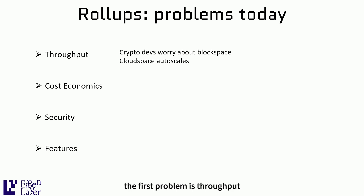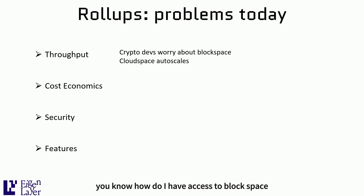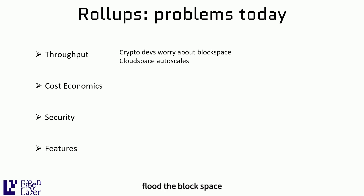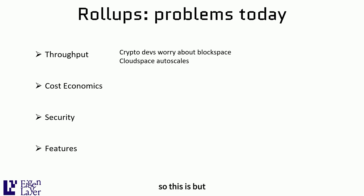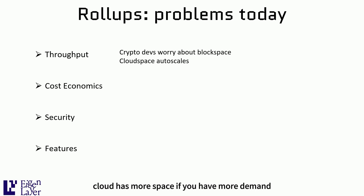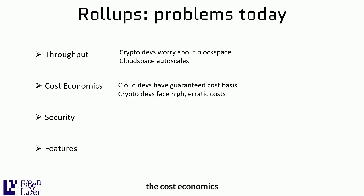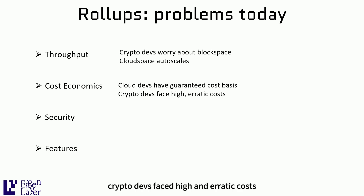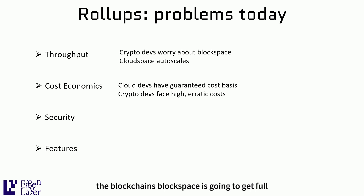The first problem is throughput. If you go talk to any crypto dev, they'd probably be worrying about block space — how do I have access to block space? Is somebody going to come and flood the block space? Yuga Labs does their next board drop and suddenly you're drowned in traffic. This is not the case with cloud; the cloud auto-scales, it has more space if you have more demand. That's how crypto should be, but it is not. The second problem is cost economics. Cloud developers are used to guaranteed performance and cost basis, whereas crypto devs face high and erratic costs — you don't know when the blockchain's block space is going to get full and you will face congestion costs.